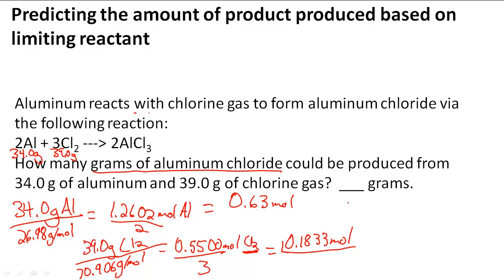I'm going to do 0.5500 moles of Cl2 times 2 divided by 3. This is because of the mole ratio 3 to 2—every 3 of these I have 2 of these. So I multiply by 2 and divide by 3 to get the moles of AlCl3. That's going to turn out to be 0.3667 moles of AlCl3.